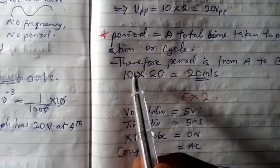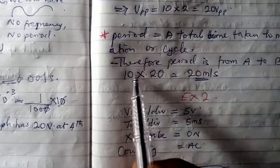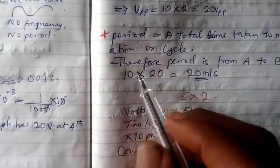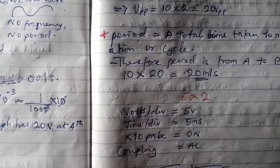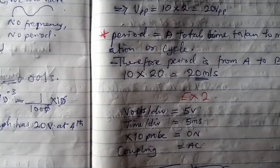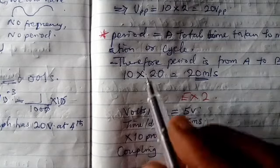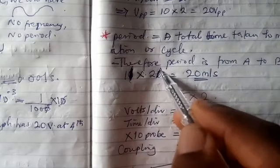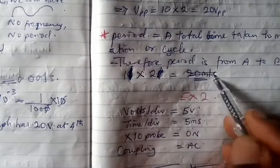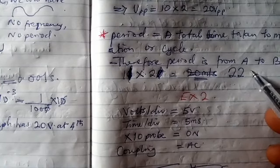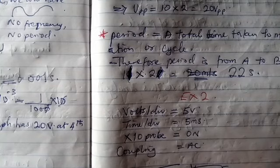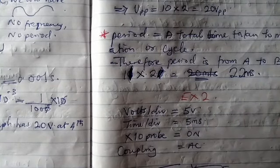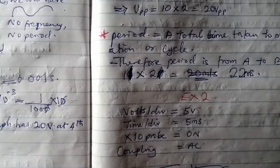Period is from A to B. Our time per division is giving us two milliseconds. So we are going to use the two to multiply the 11. 11 multiplied by two gives us 22 milliseconds as the period.